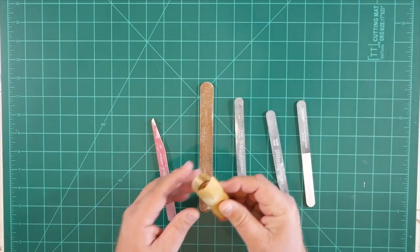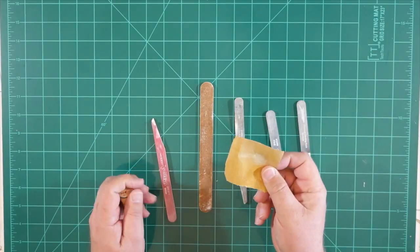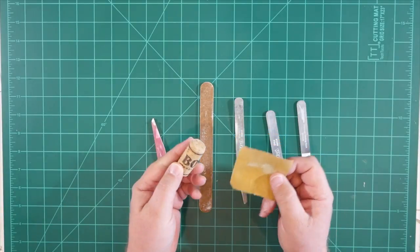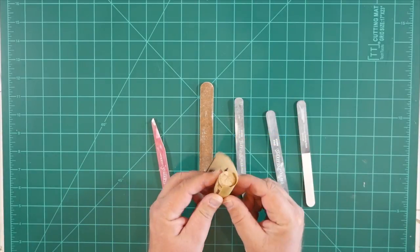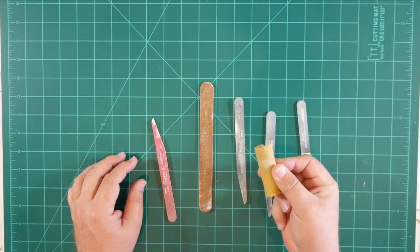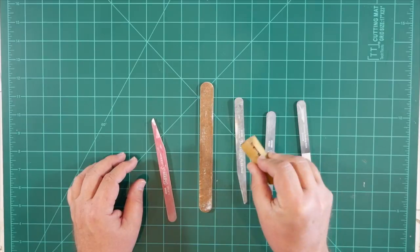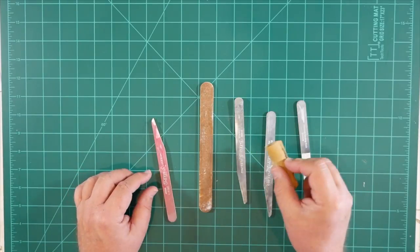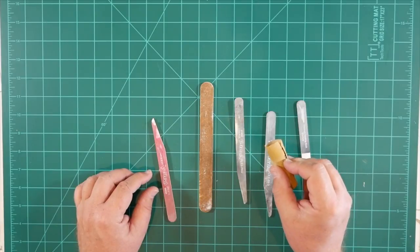Now another thing I recommend is just have some sandpaper on hand. This is 220 grit sandpaper and this is a wine cork. What I do here is I wrap the sandpaper around the wine cork and it's very effective for sanding curved items like the inside of the airframe tube that we'll need to do when we build this kit.